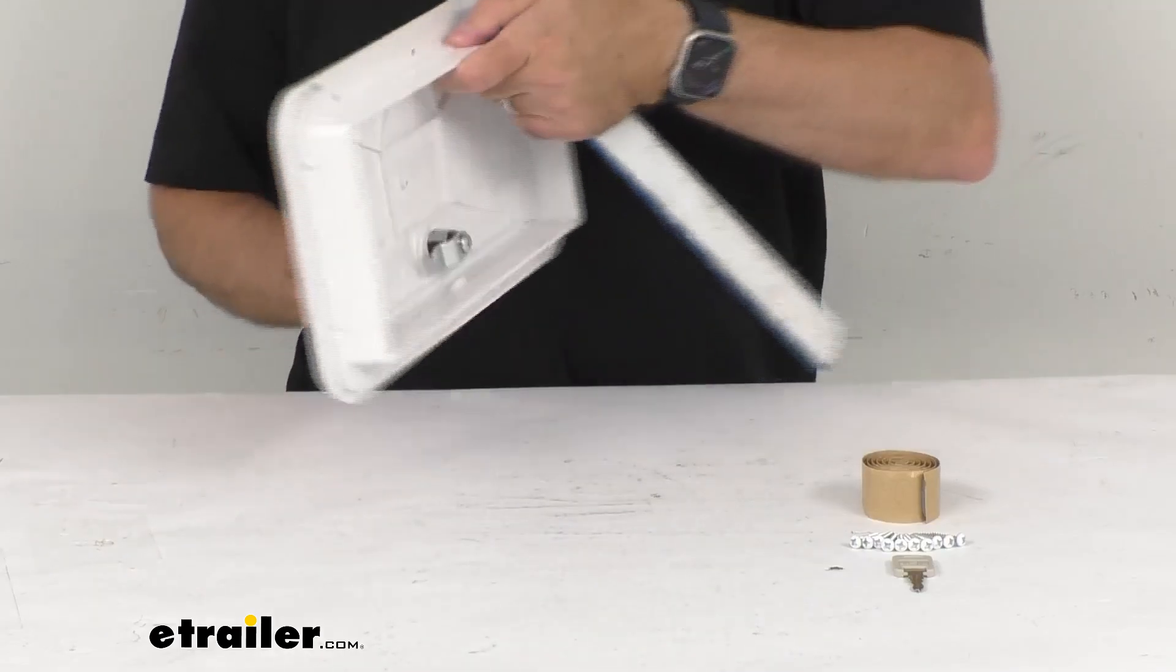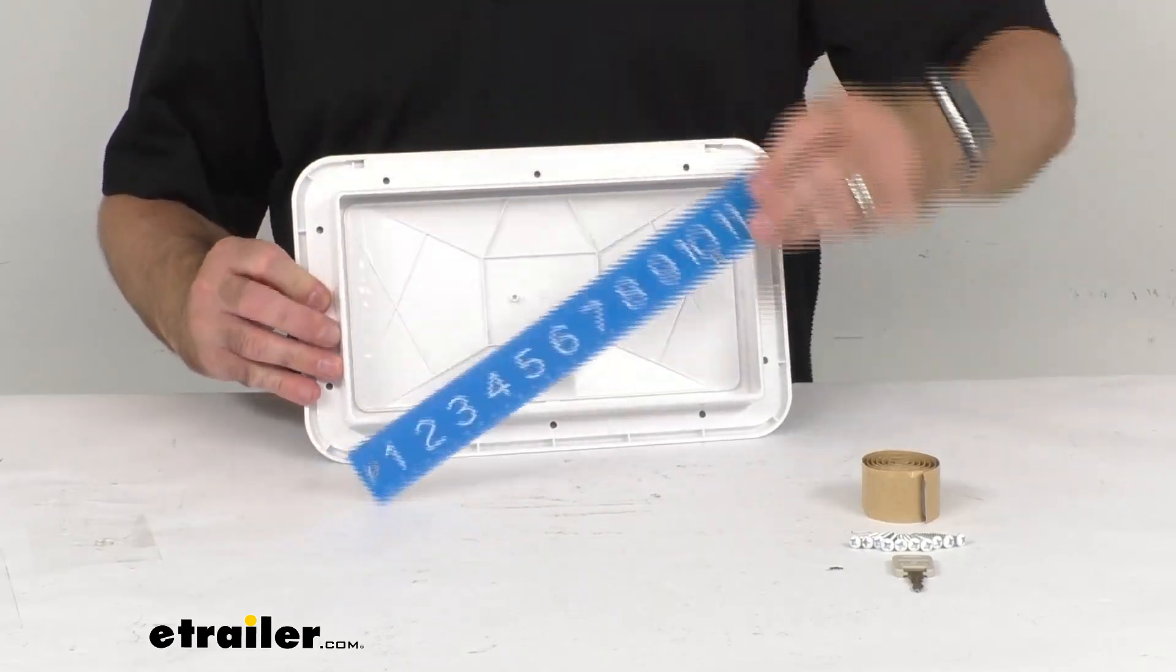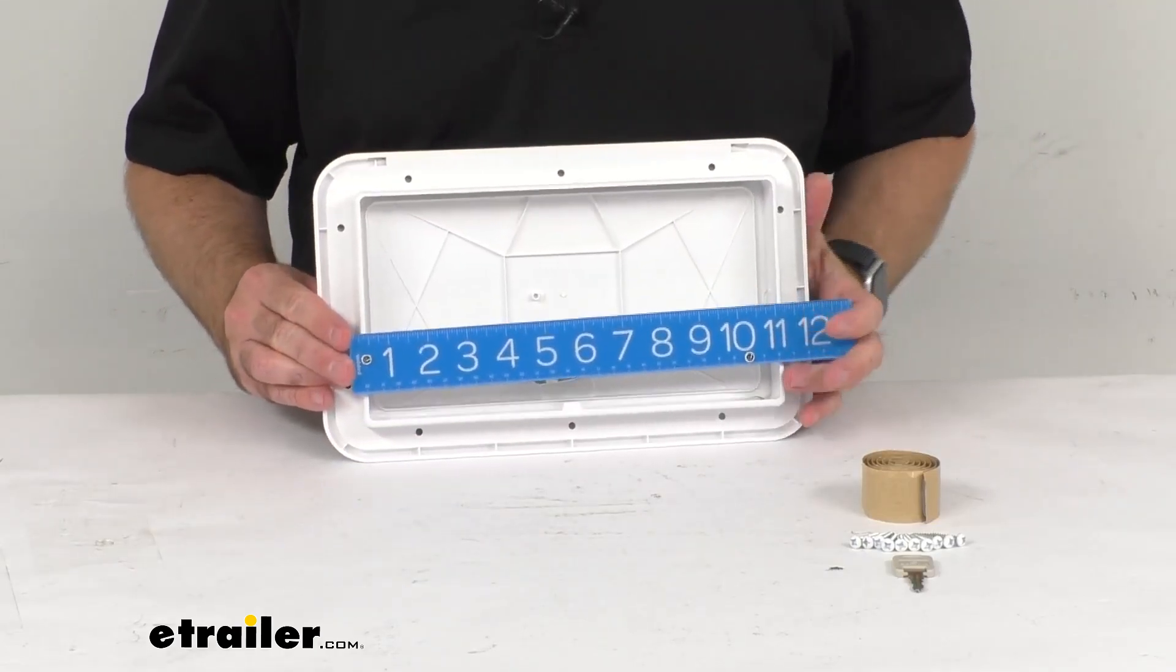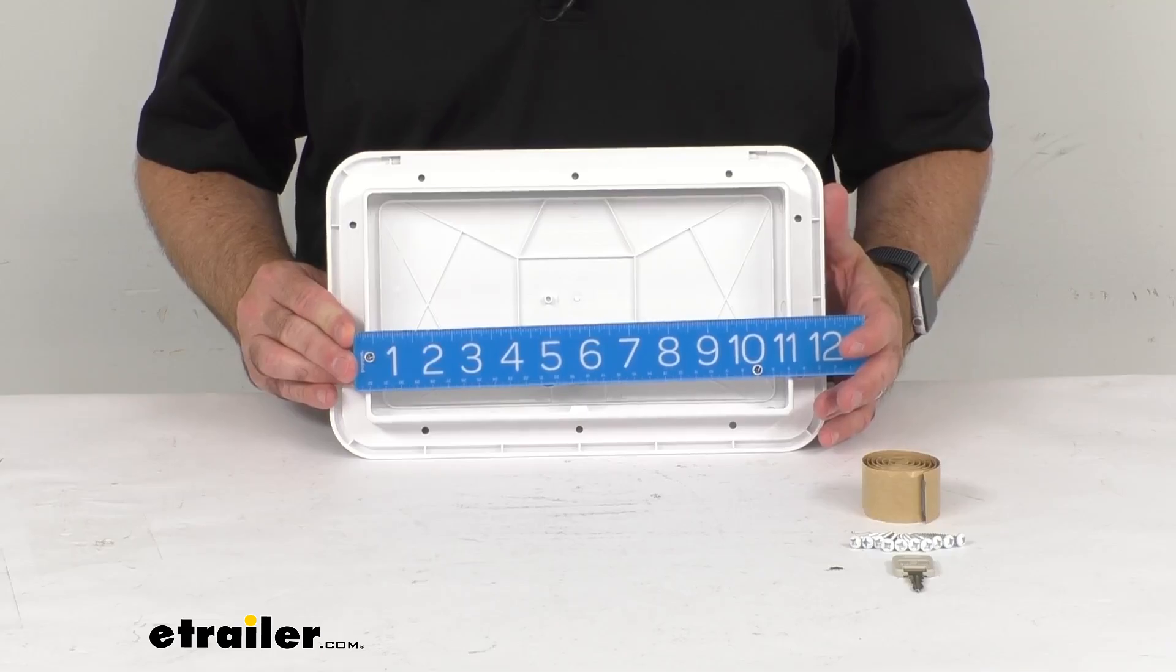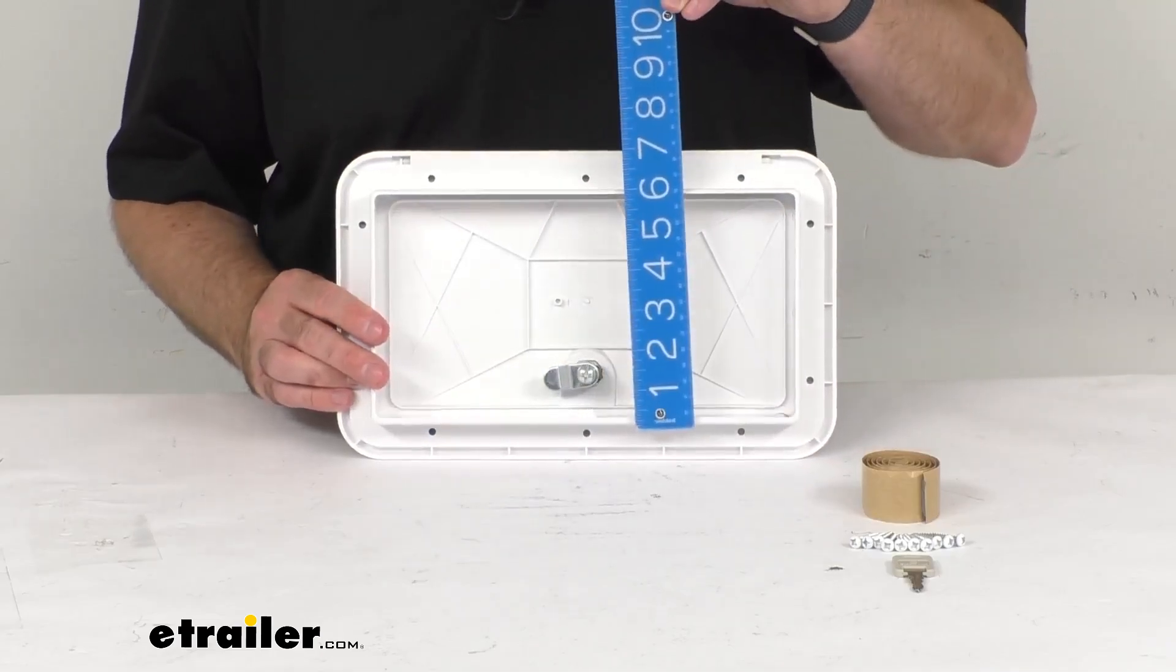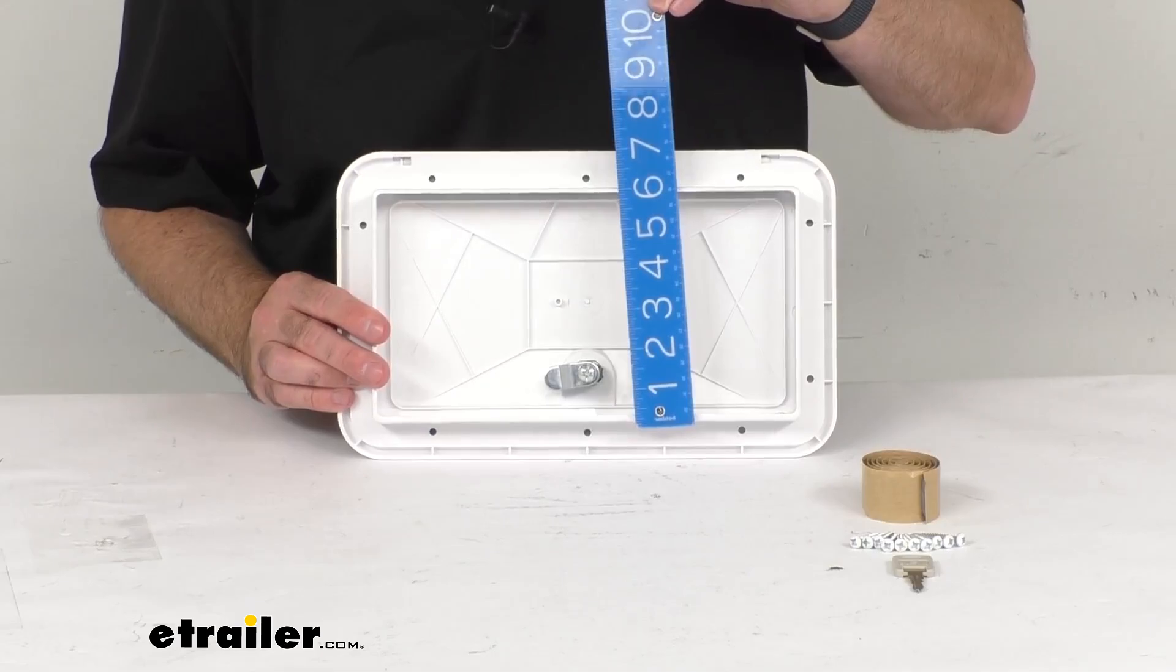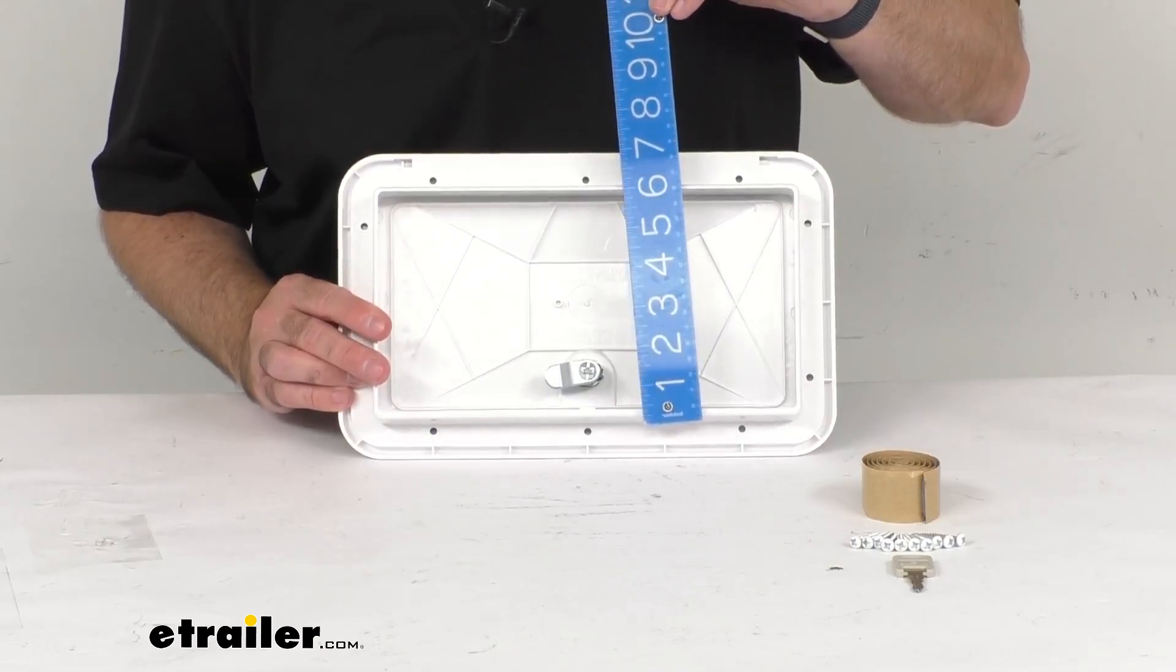Looking at the cutout, beginning with the width, we're at about 11 1/16 inches wide, and the height is right at about 6 inches tall.